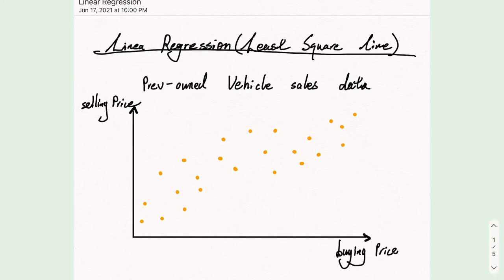We have a graph of pre-owned vehicle sales data. On the x-axis, we have the buying price, which is the price of the car initially bought. On the y-axis, we have the selling price, which is the price of car sold. We see some linear relationship between them. The higher the buying price, the higher the selling price.